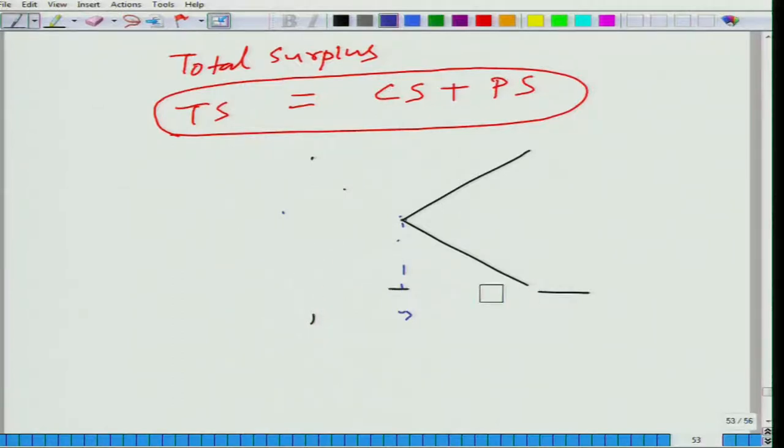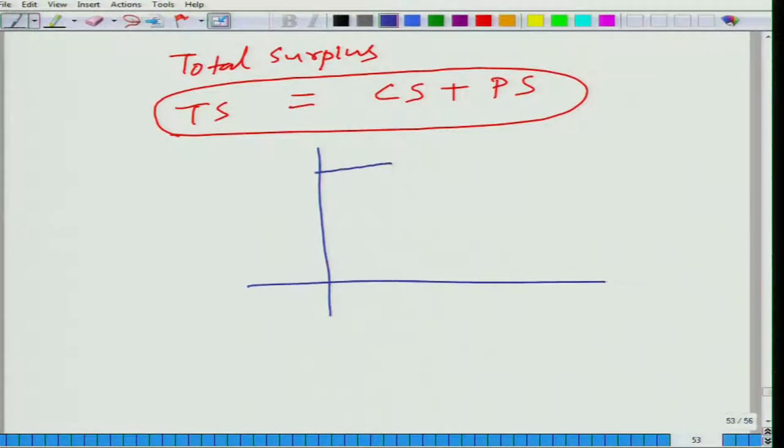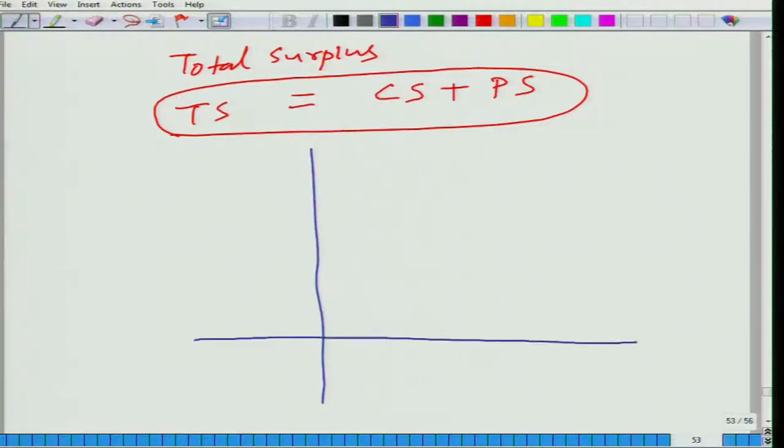I think it would be easier if we use the step function to understand rather than using the continuous function. So let me draw, this is the demand and there is something wrong with this graph, it cannot be like this, it will always intersect.